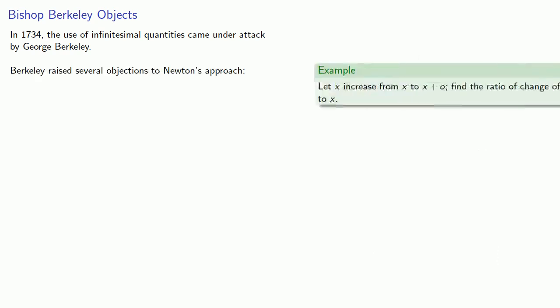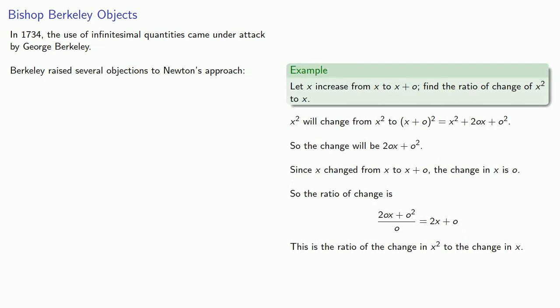First, in problems like this, x to the n and x plus o to the n can only have different values if o is not equal to zero. Okay, so that's not a problem because this allows us to divide to obtain a ratio between the flexions.